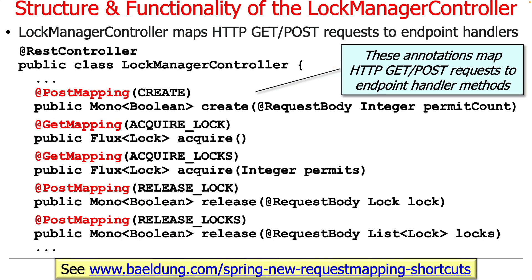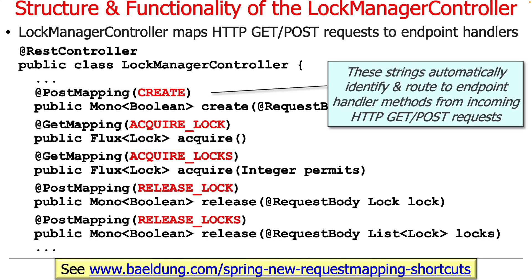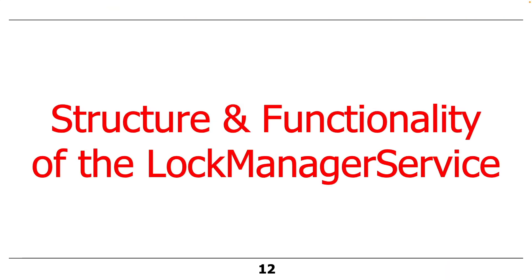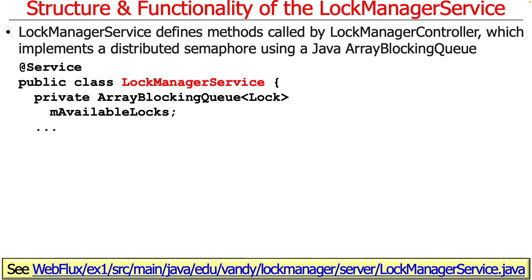As before, we use POST mapping and GET mapping — that really hasn't changed. As before, we need path names to identify the endpoint handler methods — that really hasn't changed. We also have the various annotations to take requests coming out of the HTTP request and convert them into Java objects — that hasn't changed. Really, the only thing that's changed is the use of reactive types as the return values, and that then translates into a different implementation strategy for the lock manager service.